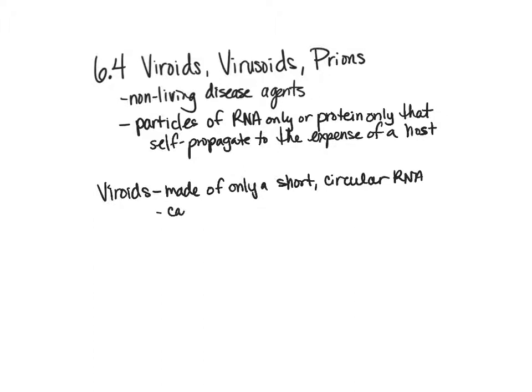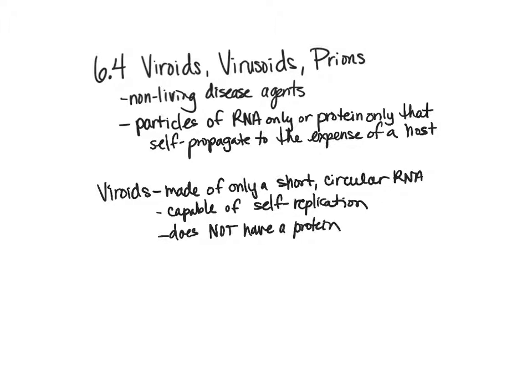A viroid is capable of self-replication. It does not have a protein coat, so it is not a virus. A virus has nucleic acid inside with a protein coat — even a simple virus is just nucleic acid in a protein coat. But a viroid does not have a protein coat; it literally is just a short band of circular RNA.